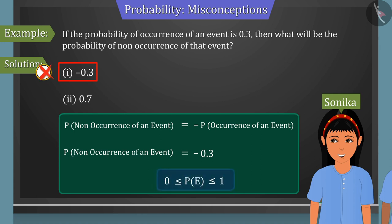Because the probability is always between 0 to 1. That is, it can neither be negative nor be greater than 1.